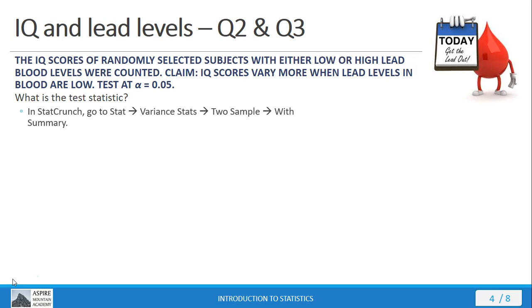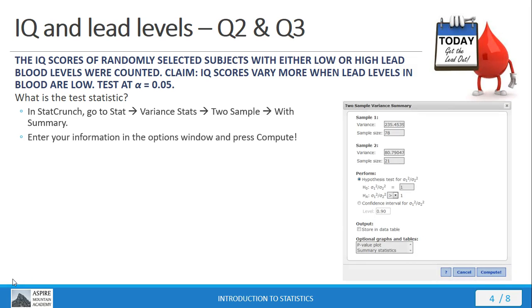The test statistic. We get the test statistic easily by going to StatCrunch. Go to Stat, VariantStats, two samples with summary. There in the options window, go ahead and enter your information in.